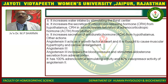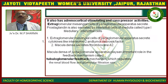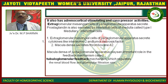Angiotensin-2 increases blood pressure and stimulates aldosterone secretion from the adrenal cortex, having 100% adrenocortical stimulating activity and 40% vasopressor activity. Angiotensin-3 also has adrenocortical stimulating and vasopressor activities.